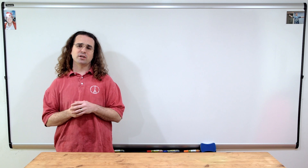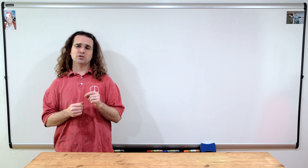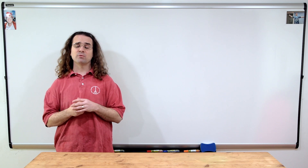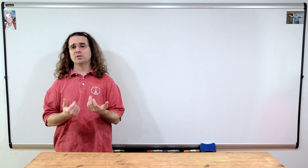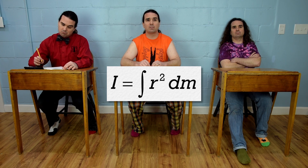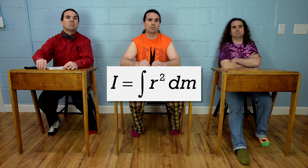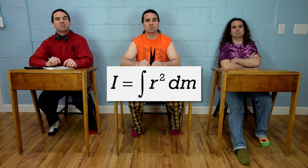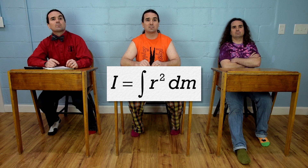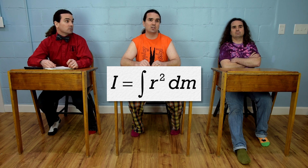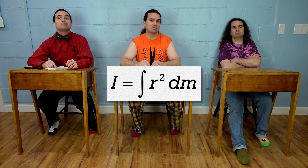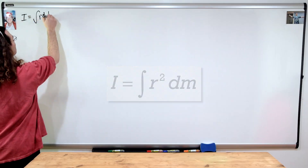Bobby, what is the equation for the rotational inertia of a rigid object with shape? The rotational inertia of a rigid object with shape equals the integral of r-squared with respect to mass, where r is the distance each infinitesimally small piece of the object is from the axis of rotation.